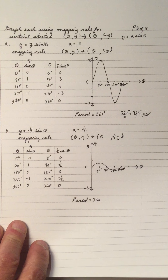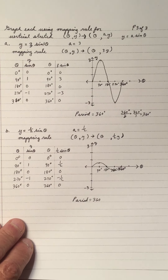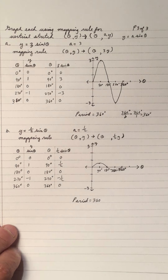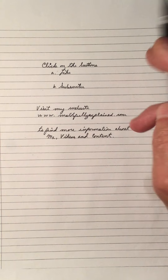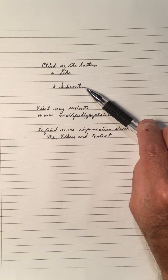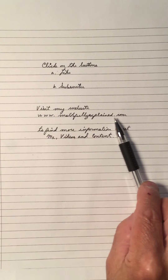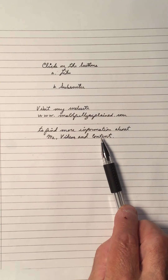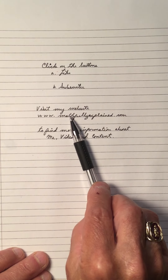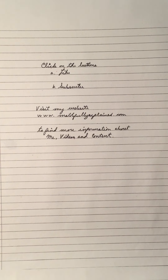And that brings us to the end of looking at the vertical stretch. The vertical stretch is stretching the y value in the graph. If you like my video, click on the like button; if you're not a subscriber, click on the subscribe button. Visit my math website at www.mathfullyexplained.com to find more information about me, my videos, and the content on my YouTube channel called Math Fully Explained. Thank you for viewing my video — hope it helped you. Bye-bye.